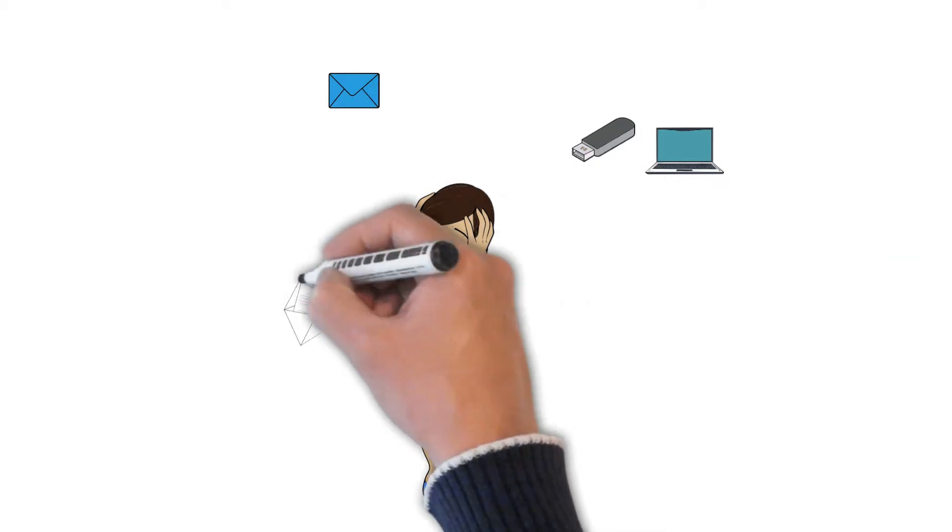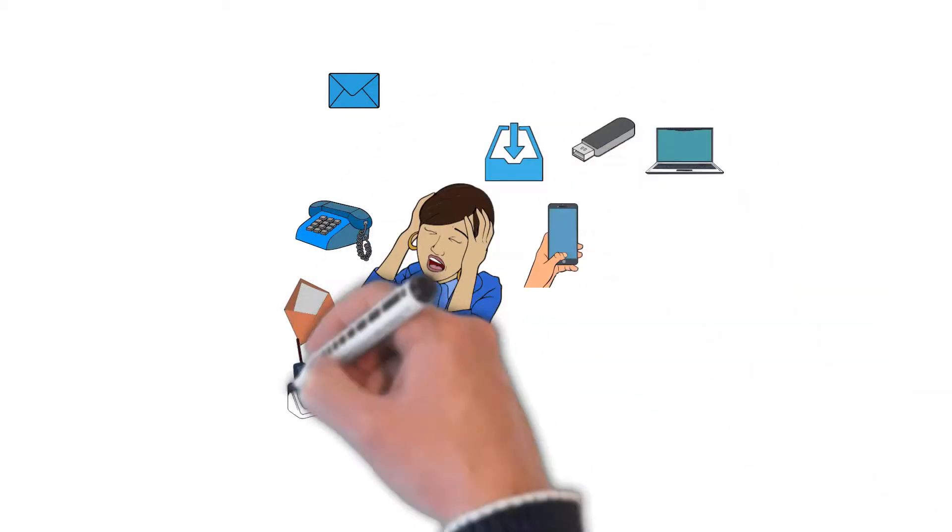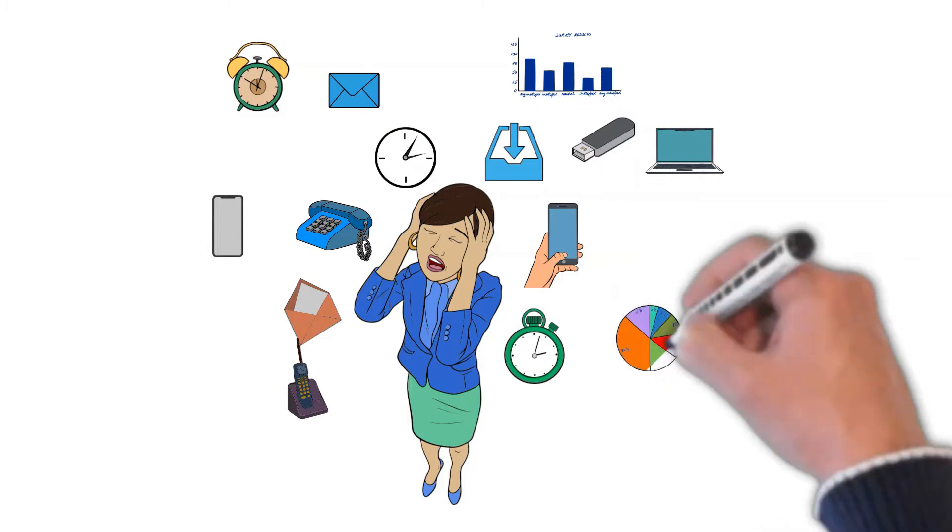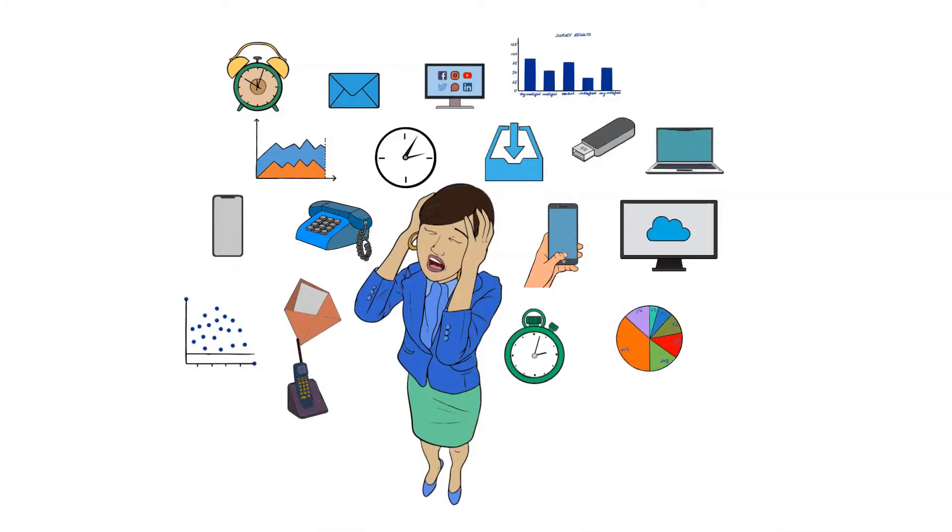Now I want to talk about the word complicated in engineering and business terms. When we talk about complicated, we often mean too much information for us to process at once. It's an extension of the human brain's short-term memory — just too much information. So how do we manage complicated things? We use reductionism: we break them down into smaller parts, and by understanding those smaller parts we're able to understand the whole.